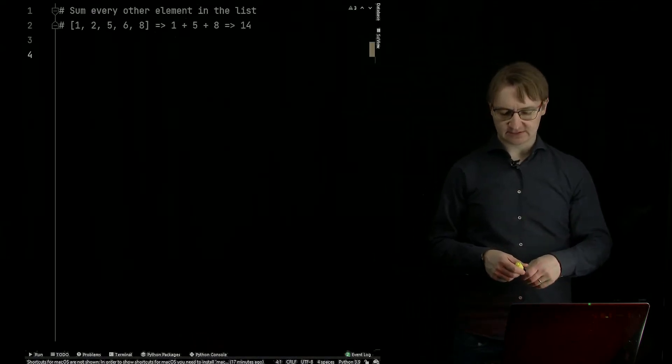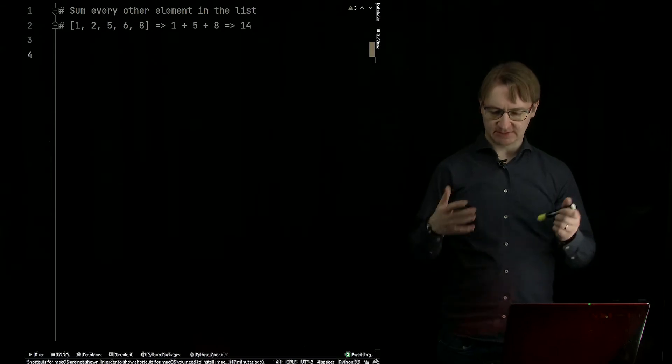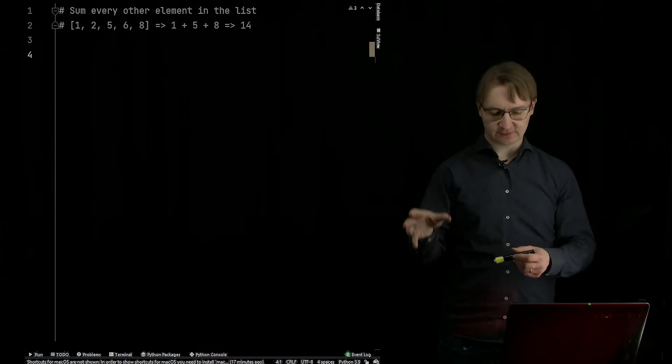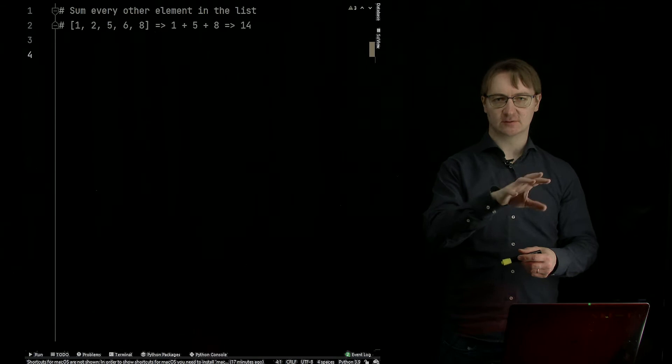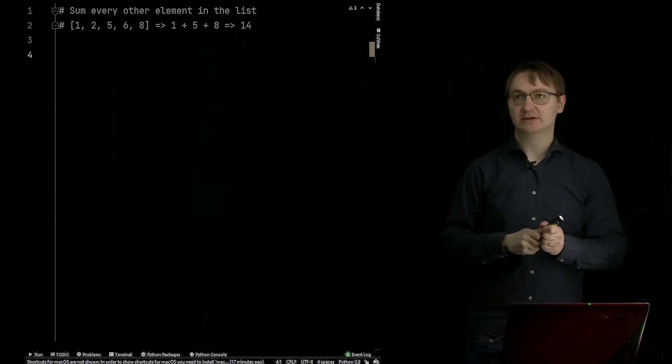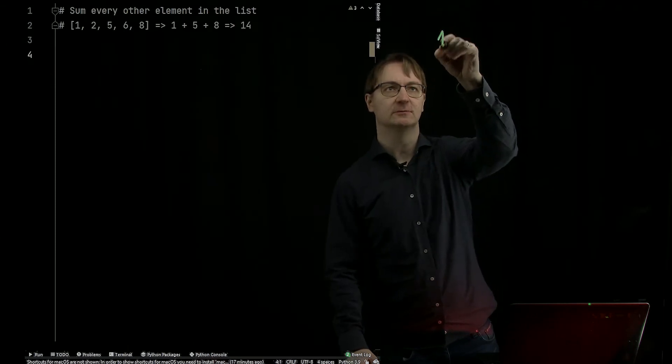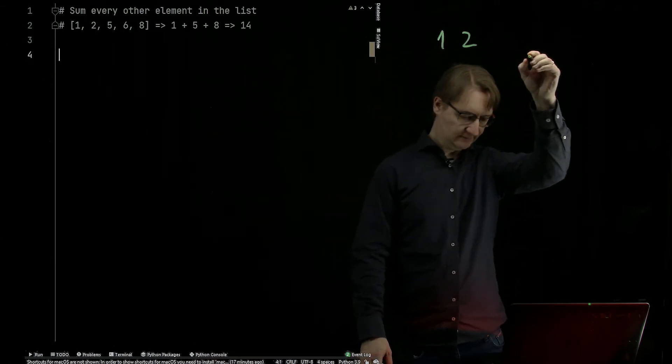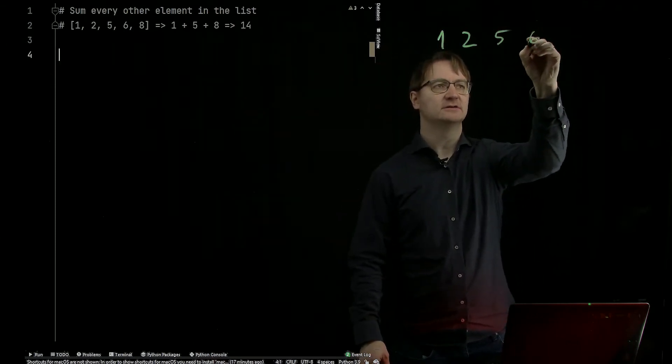Let's see how we can sum every other element in a list. So here is an example. We have some list and we want to take the first and the third and the fifth and so on. So every other element or every second element from the list. Let's write the list also here: one, two, five, six and eight.